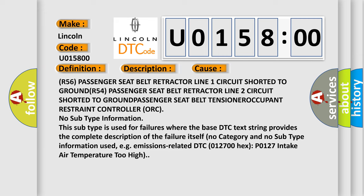No subtype information. This subtype is used for failures where the base DTC text string provides the complete description of the failure itself. No category and no subtype information used, e.g., emissions-related DTC 012700 hex P0127 intake air temperature too high.